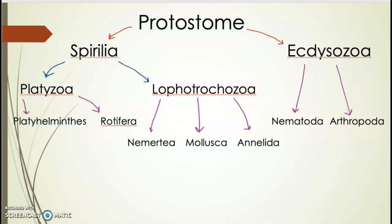On an exam, I can ask questions like: What two groups sit directly underneath protostomes? That would be Spiralia and Ecdysozoa. Which two subgroups are directly beneath Spiralia? That would be Platyzoa and Lophotrochozoa. Name two phyla classified as Platyzoa — that's Platyhelminthes and Rotifera. This concept map is very important as we go through protostomes, and we'll do something similar when we get to deuterostomes.